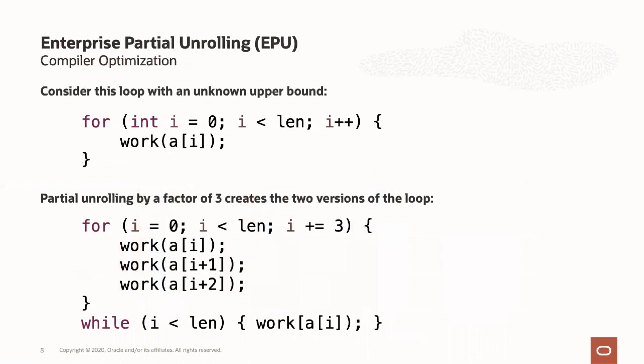One of the new optimizations in GraalVM Enterprise is partial loop unrolling. Looking at the code, you've got a simple loop iterating across an array of unknown size, doing some work for every element. Every time you go through a loop, there's a jump back in the machine code — a series of instructions, hop back, increment counters — so there's a fair bit of overhead per item. In our partial unrolling optimization, we're essentially batching or inlining parts of the loop.